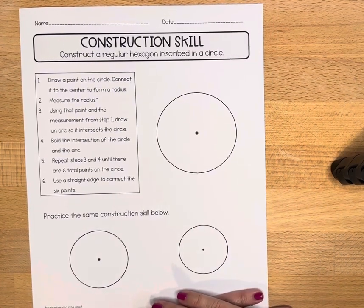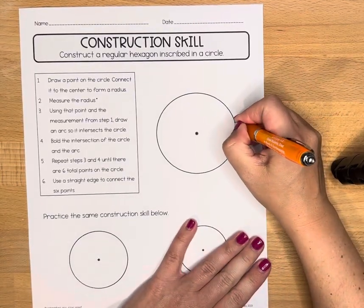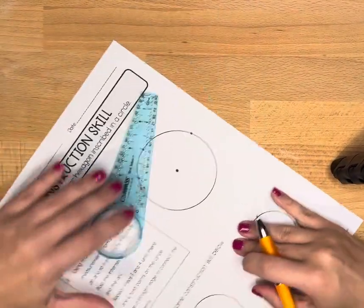First thing we're going to do is draw a point anywhere on the circle and we're going to connect it to the center in order to form a radius.